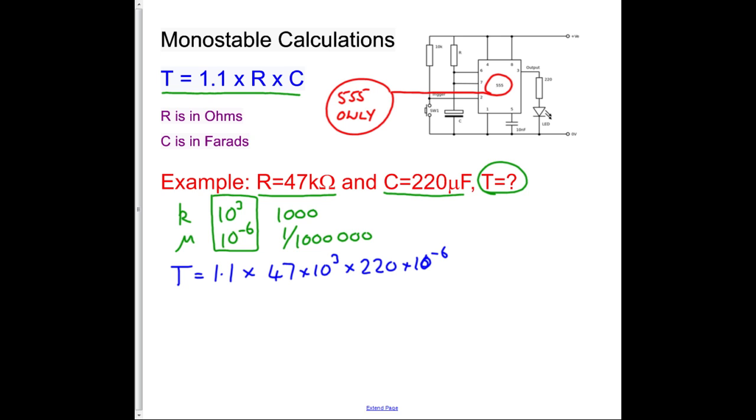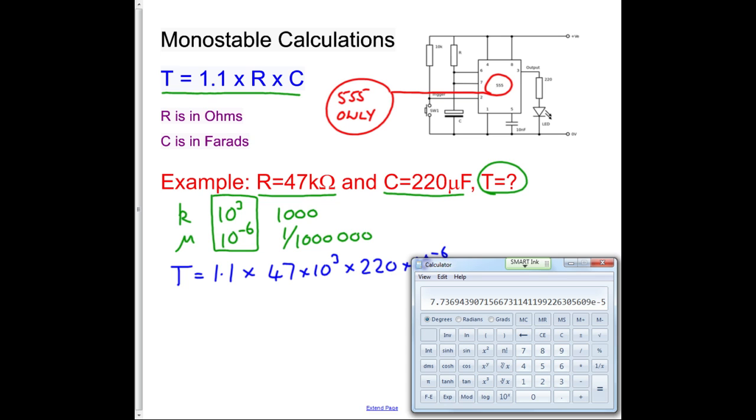Now we get our Windows calculator and we see if we can actually do this equation. So we take our 1.1, multiply it by 47, we use the exponent function, I've just pressed there, 10 to the 3 multiplied by 220, exponent minus 6 equals.